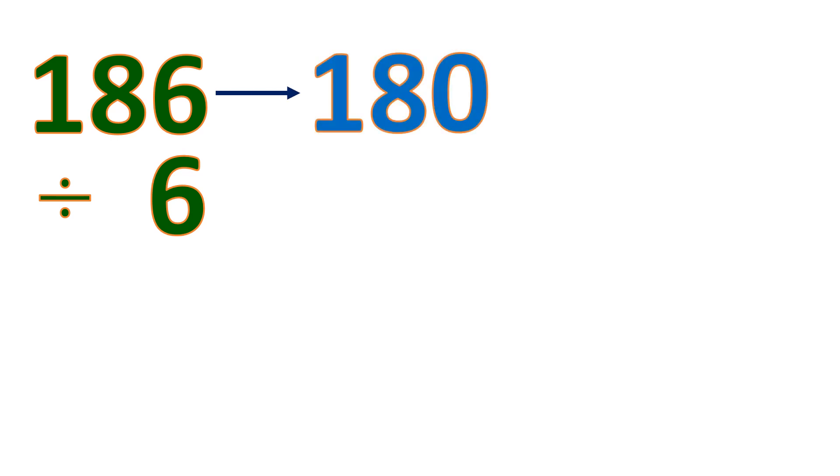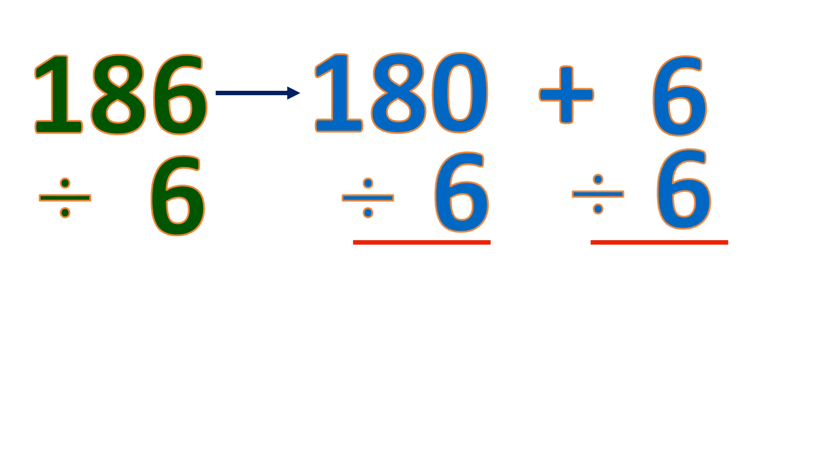Let's have another example. 186, a 3-digit number, divided by 6, a 1-digit number. So let's divide this. Let's split 186 into 2. We'll have 180 and 6 because 18 is divisible by 6, and 6 is of course divisible by itself. So let's divide both by 6.